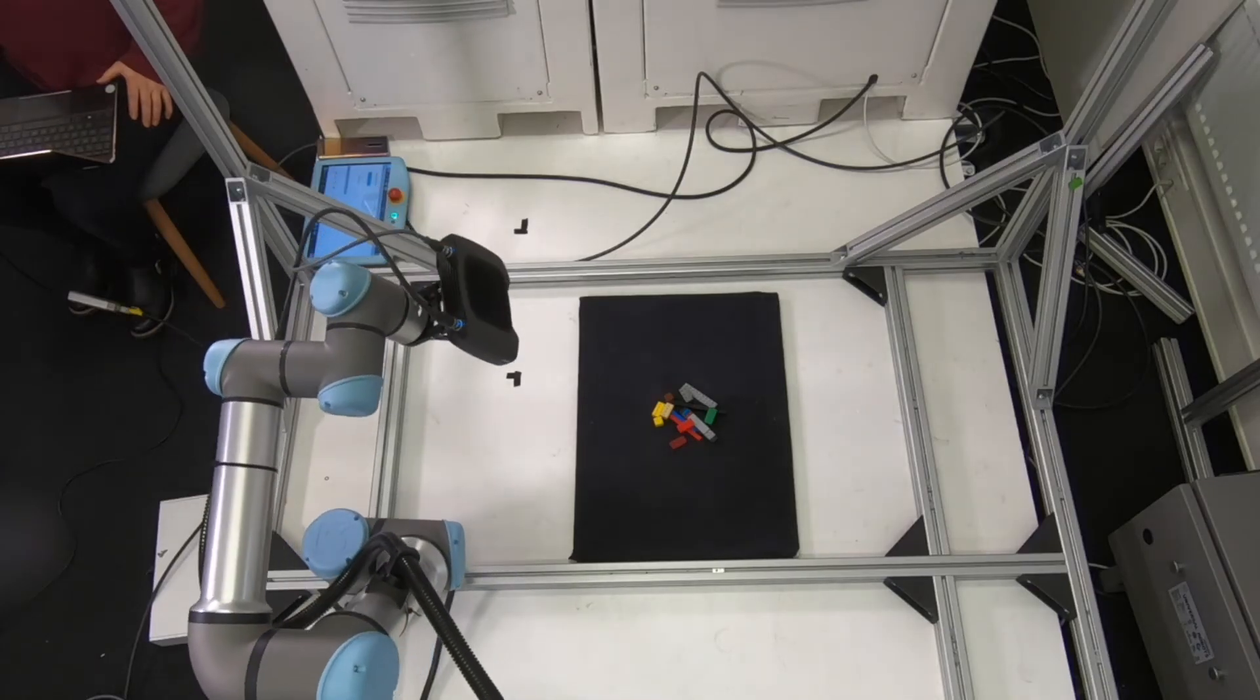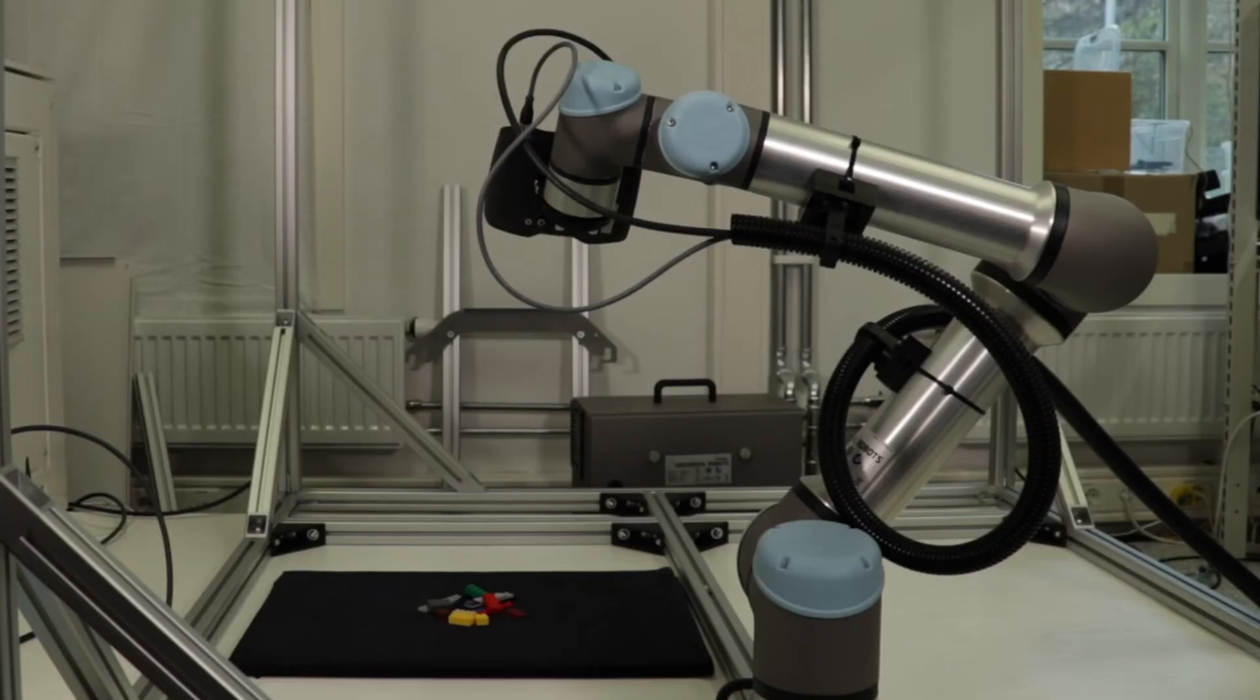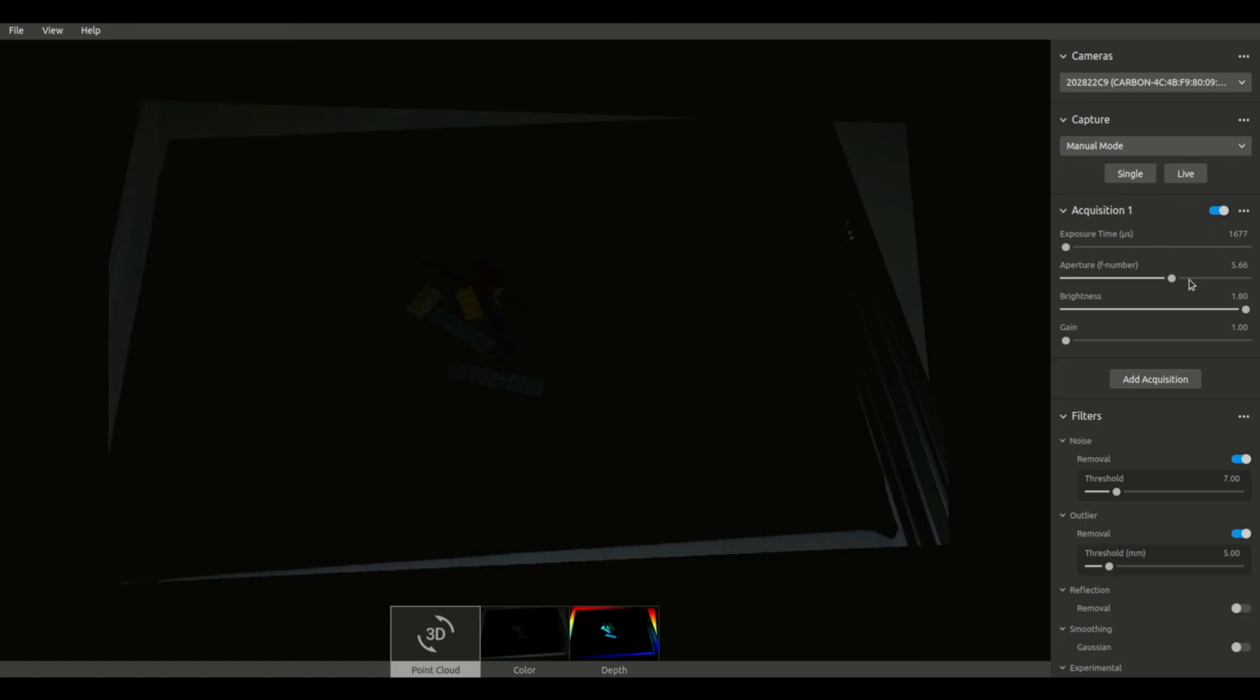Capturing images with the Zivid 2 is very straightforward. The first thing you need to do is connect to your camera using its IP address. Afterwards, it's as simple as point and click.